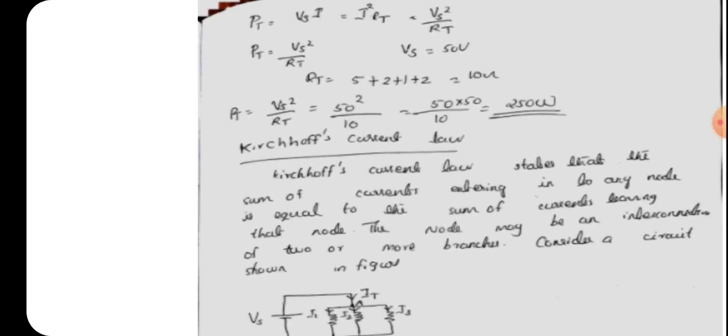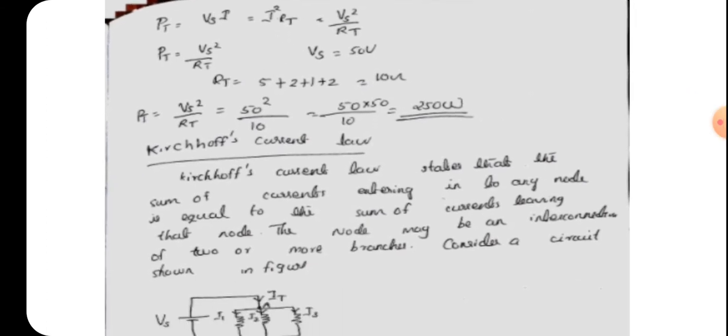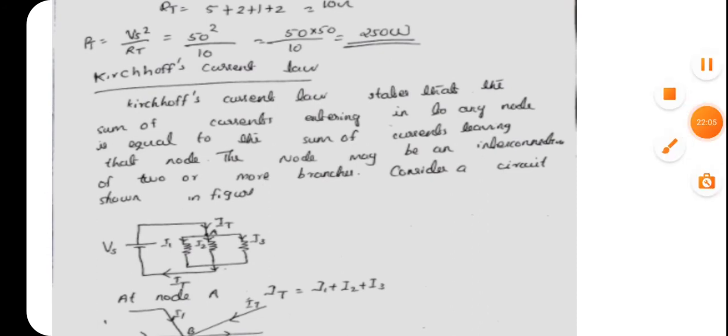Problem: determine the total power in the series circuit. The circuit contains a 50-volt battery, a 5-ohm, a 2-ohm, a 1-ohm, and another 2-ohm resistor. Using the equation: total power equals Vs squared divided by Rt. Vs is 50 volt and Rt equals 5 plus 2 plus 1 plus 2 equals 10 ohm. Therefore total power equals 50 squared divided by 10, which gives 250 watt.